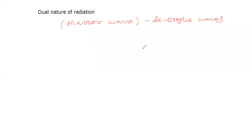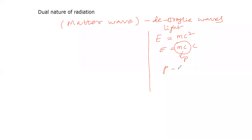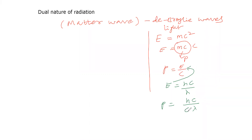If there is a wave associated with the moving particle, there is a certain wavelength. If we look at energy of radiation — that is light — energy is E = mc², which equals mc into c. So m into c is momentum. That gives us momentum equal to energy divided by c, and therefore momentum is equal to Planck's constant divided by wavelength.